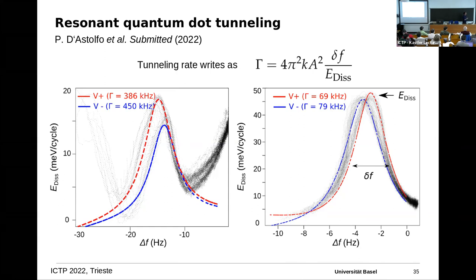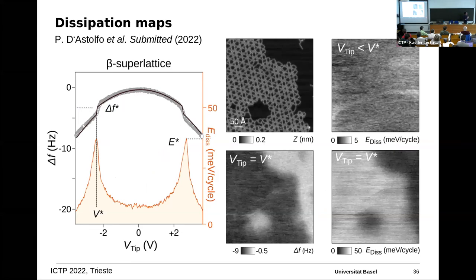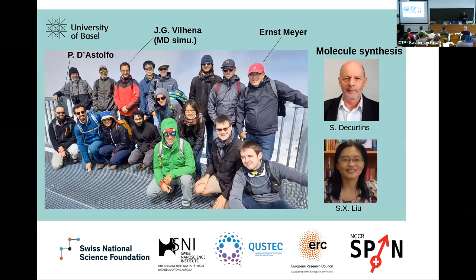The tunneling rate shows how easily electrons transfer between dots in the delocalized states. We can also image the dissipation: at the special voltage you see different contrasts in force, and dissipation is observed all over the assembly — confirming we are inducing currents in the molecular sample. I want to acknowledge Philip, who managed most of these measurements.